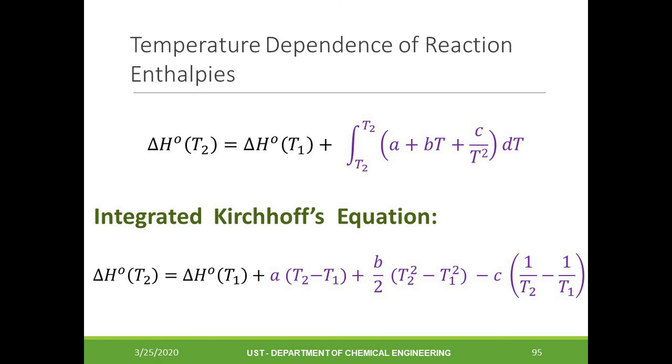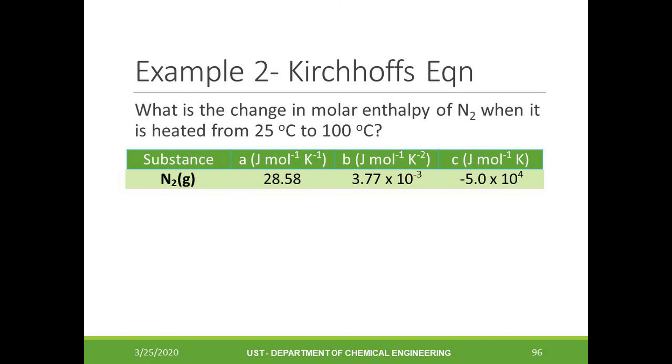Let's consider this problem. What is the change in the molar enthalpy of nitrogen when it is heated from 25 degrees Celsius to 100 degrees Celsius? The values of A, B, and C are already given in the table. This is our working equation and basically, we just have to calculate the values written in red, purple, and blue.